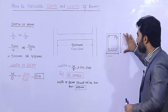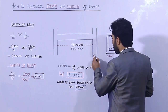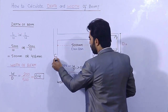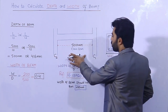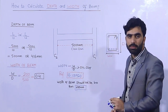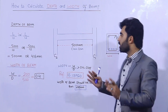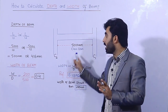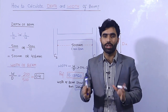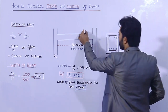As you can see, this is the section of a beam. This is column 1 (C1) and column 2 (C2). The clear span between the two columns is 5000 millimeters, or 5 meters. So if we have a span of 5000mm between two columns, what should be the depth and width of the beam?